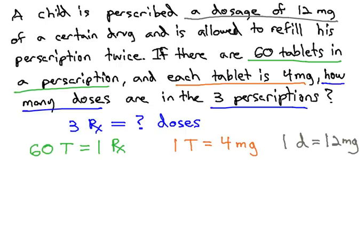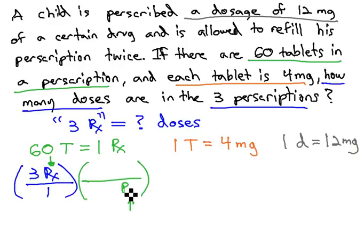With dimensional analysis, we start with what we have and make it a fraction. Three prescriptions, and make it a fraction over 1. We then can start setting up conversion factors. First, we need to get rid of the prescription, because we're looking for dosage, so we need to put them in the denominator. Looking at our conversion factor, what can we change a prescription into? We can change prescriptions to tablets, because we know there are 60 tablets in one prescription.